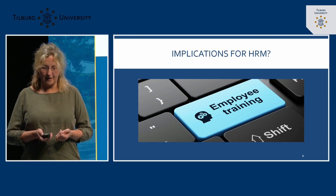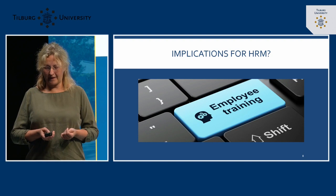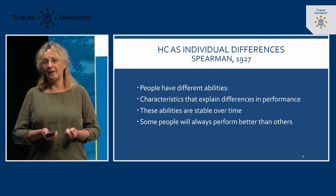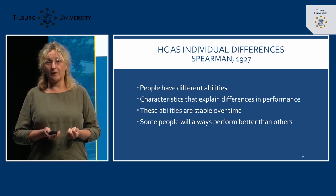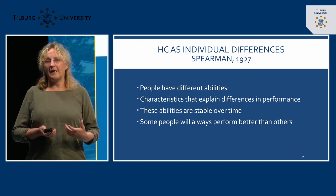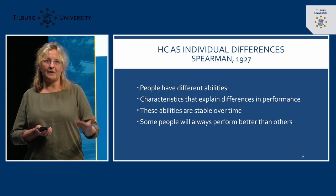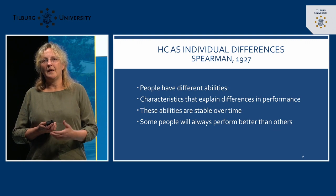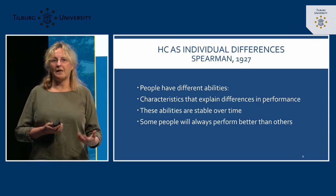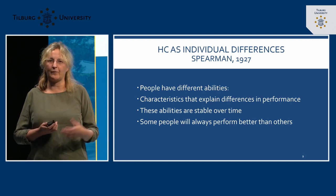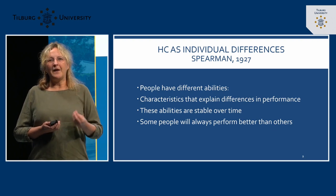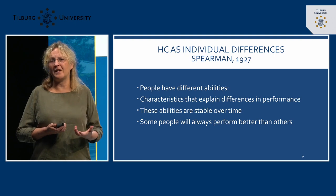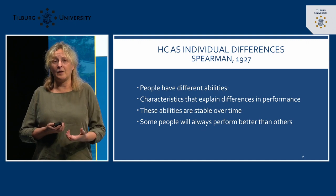At the start of this clip, I mentioned there's also another theory of human capital: human capital as individual differences, originated by Spearman in 1927 and elaborated and researched over decades until today. The key idea is that if you compare people, you'll notice they have different abilities — some people are good at math, others at language, some people are really social. People differ from each other in a kind of stable way. Somebody who is really talkative will likely be that as a child and also when they retire.